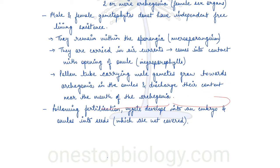Pollen grains are carried by air currents and come into contact with the opening of the ovule. A pollen tube develops, carrying the male gamete towards the archegonia in the ovule, and discharges its content near the mouth of the archegonia. Following this, fertilization occurs and the zygote develops into an embryo, and ovules develop into seeds which are not covered — hence the name gymnosperms.